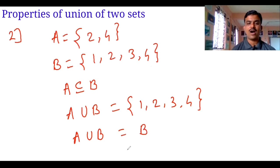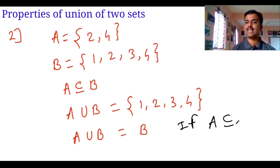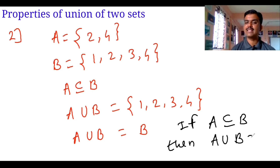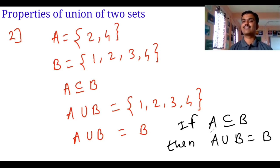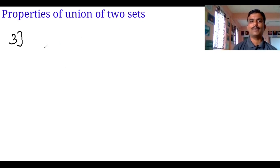So our second property is: if A is a subset of B, then A union B is equal to B.